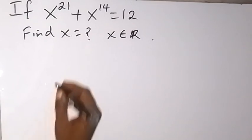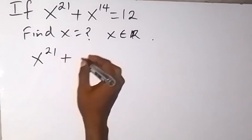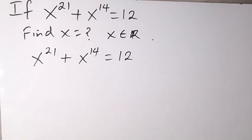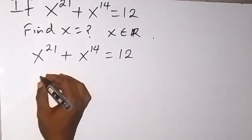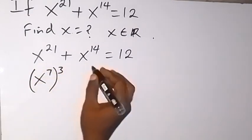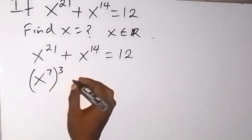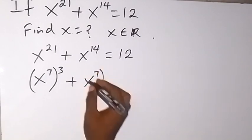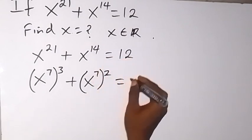From here, we have x raised to power 21 plus x raised to power 14 equals 12. Now let's rewrite this as x raised to power 7, raised to power 3 — that still gives us x raised to power 21 from the law of indices — then plus x raised to power 7 raised to power 2, which gives x raised to power 14, equals 12.